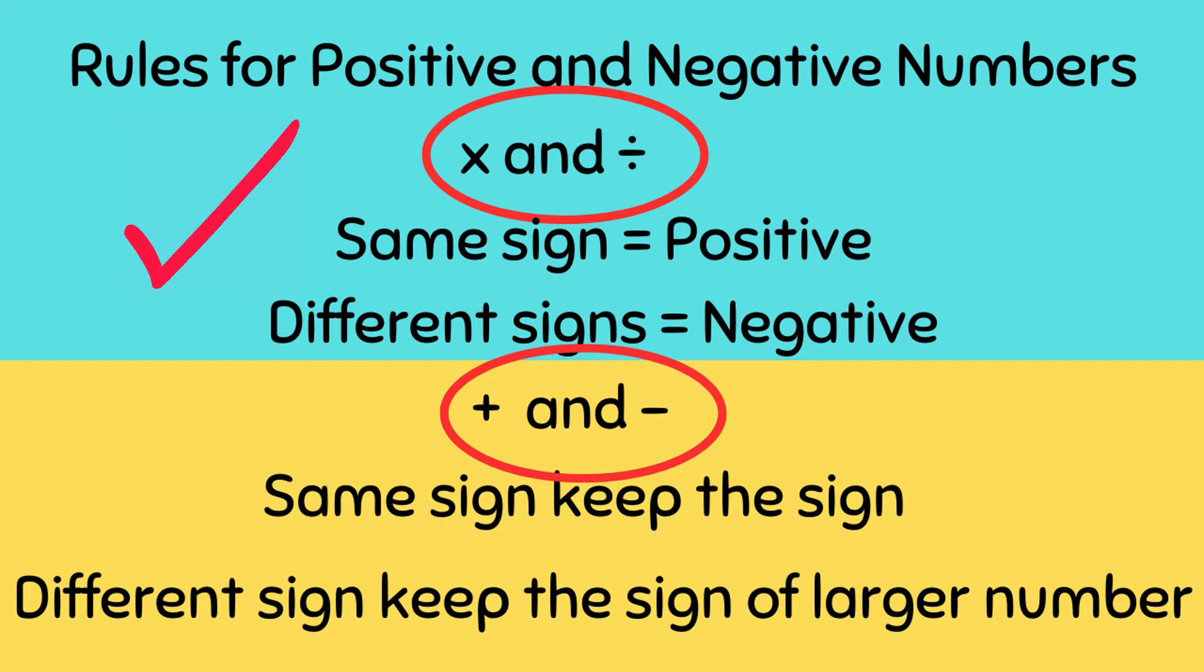With multiplication and division, whenever you have same signs, it's going to be positive. When you have different signs, it will be negative. Pretty straightforward.